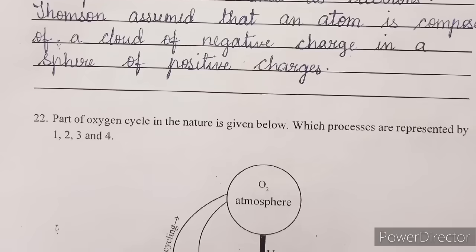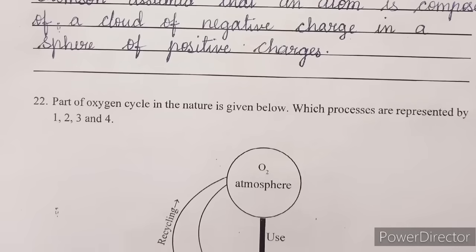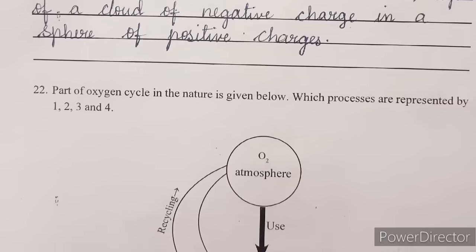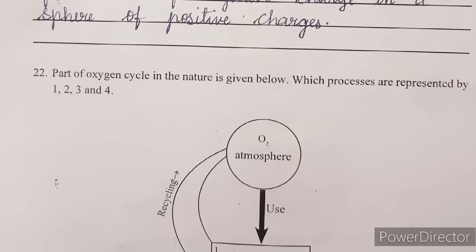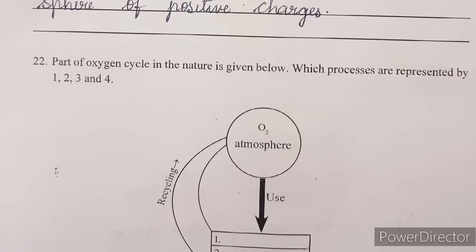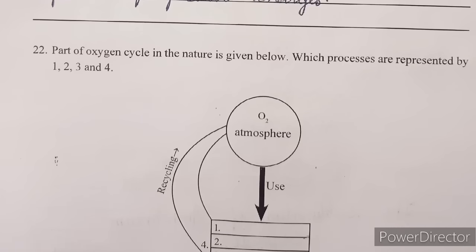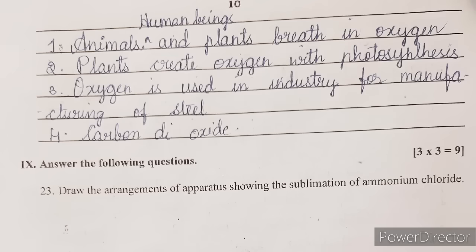Next question: a part of the oxygen cycle in nature is given. Which processes are represented by 1, 2, 3, 4 in the diagram? We need to name each numbered process. Write three uses of oxygen: (1) animals, human beings and plants breathe in oxygen; (2) plants create oxygen through photosynthesis; (3) oxygen is used in industry for the manufacture of steel. Number 4 in the picture is carbon dioxide.